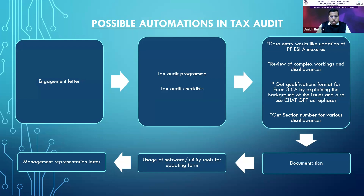It is important to have an audit program even for tax audit. Then for tax audit checklists, many people are of the view that the 44 clauses in tax audit are themselves a checklist and there is no need for one. Actually, it is not so — we need to have a checklist even for tax audit. AI can also be used to perform various data entry works in tax audit form, like updating the clause on employees' contribution on PF and ESI. Suppose an assessee has 84 branches and 800 to 900 plus entries — in those cases, we can use CA ChartGPT or ChartGPT versions to get the data entry work easily done.